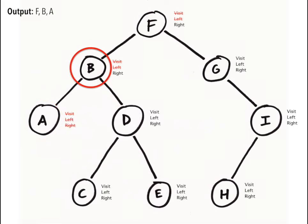This time, we'll traverse the right subtree. This is the magic of recursion. We print D and visit its left and right subtrees.